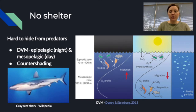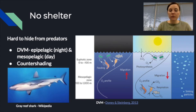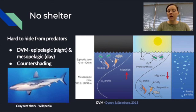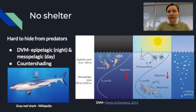Another challenge is that there is no bottom in the pelagic zone — nothing for plants or coral to grow on, no rocks to hide behind, so there's no shelter and it's very hard for organisms to hide from predators. One adaptation is diurnal vertical migration: organisms come up to the epipelagic at night to feed on phytoplankton, then go back down into the mesopelagic during the day, using the darkness as a hiding mechanism.